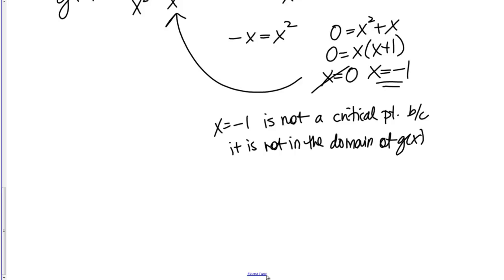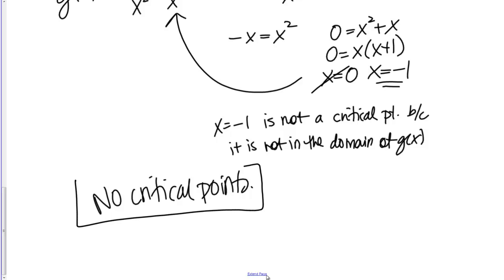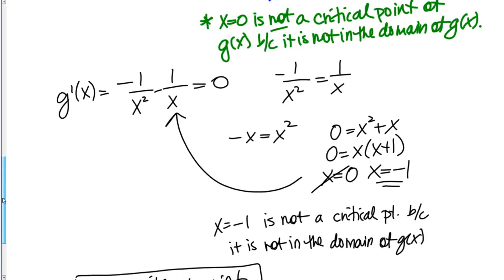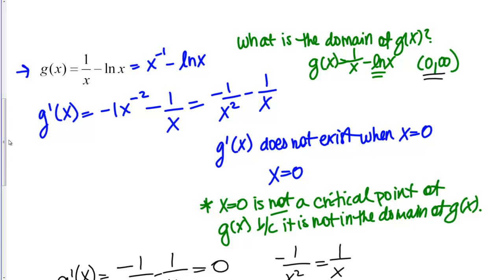We've checked for places where the derivative does not exist and where the derivative equals 0. In the end, there are no critical points for g(x). The moral of this problem is that you always want to check and make sure that proposed critical points are actually in the domain of your original function before reporting them as your answer.